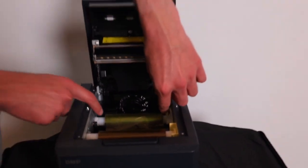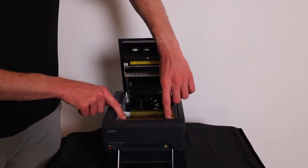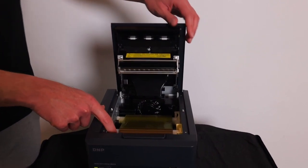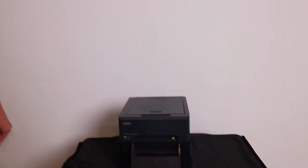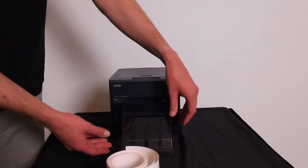That cannot really be missed. It can only be done one way. You then roll up the ribbon a little bit so that it fits tight, and then the top lid can be closed again. And then we will position the paper.